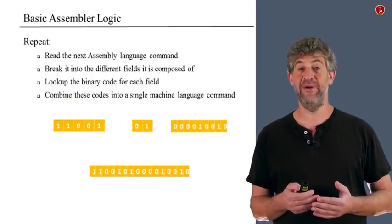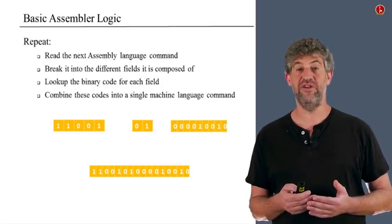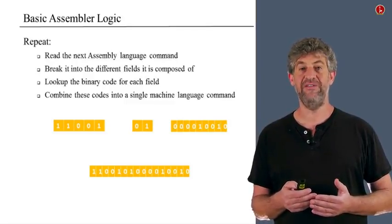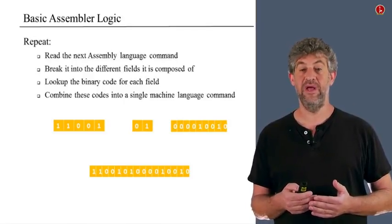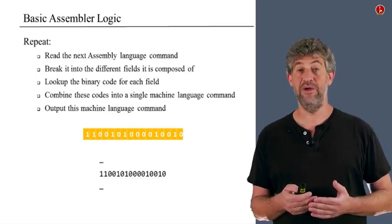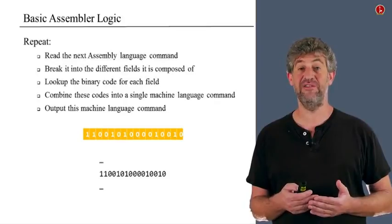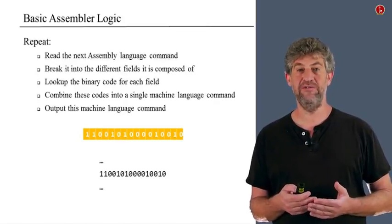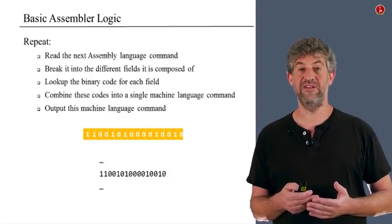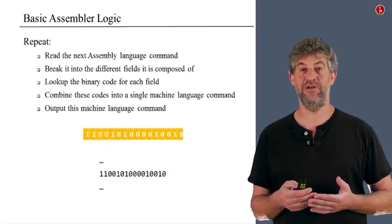Now we have the translation of each part, and we need to put them together — usually just some kind of concatenation. We may also need to add some other bits defined by the specification to pad and complete the instruction, since sometimes a command's translation doesn't fill all the available bits in the machine. Once we have the binary number, we print it out to a file according to the file format specification of machine language.